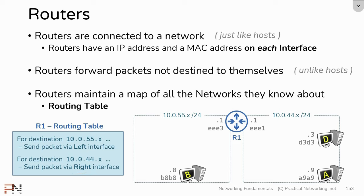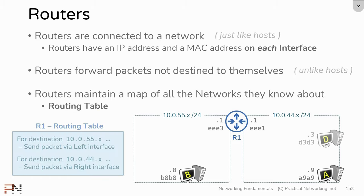So that is a basic rundown of routers and specifically the routing table. The routing table is a very important concept in networking. In fact, a large part of a network engineer's job is to ensure that every router has the proper routes in its routing table in order to move packets through a network. Therefore, we're going to spend a bit more time digging into the concept of a routing table and discussing the different methods that routes are learned.